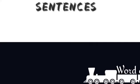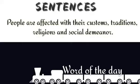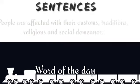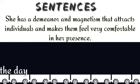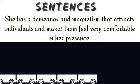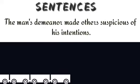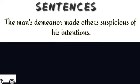Now let's have a look at its usage in sentences. The first example is: 'People are affected by their customs, traditions, religions, and social demeanor.' The next example is: 'She has a demeanor and magnetism that attracts individuals and makes them feel very comfortable in her presence.' The last example is: 'The immense demeanor makes others suspicious of his intentions.'